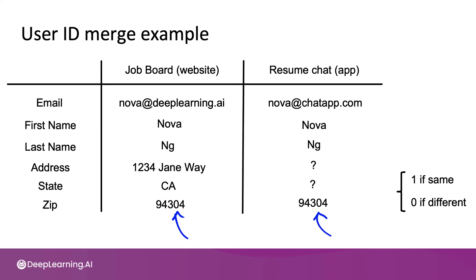But if you don't have such a ground truth set of data, what many companies have done is ask human labelers — sometimes a product management team — to manually look at pairs of records that have been filtered to have similar names or similar zip codes, and then use human judgment to determine if the two records appear to be the same person. Because whether two records really belong to the same person is genuinely ambiguous, different people will label these records inconsistently. If there's a way to get them to label the data more consistently, even when the ground truth is ambiguous, that can help the performance of your learning algorithm.